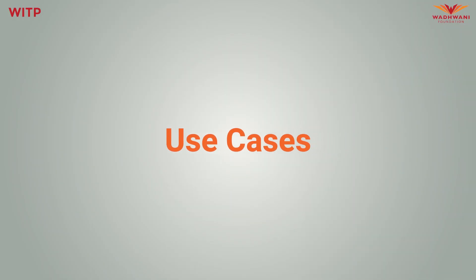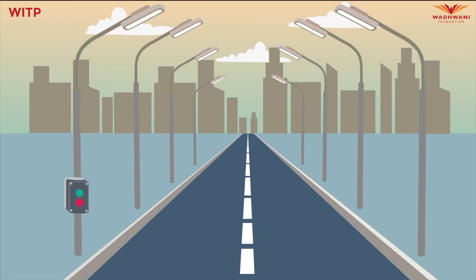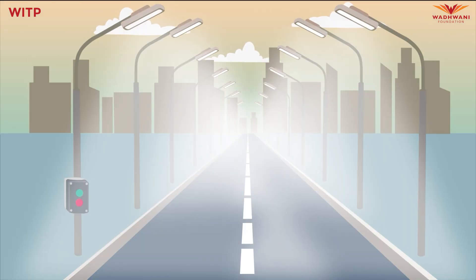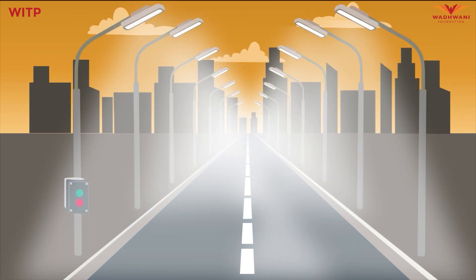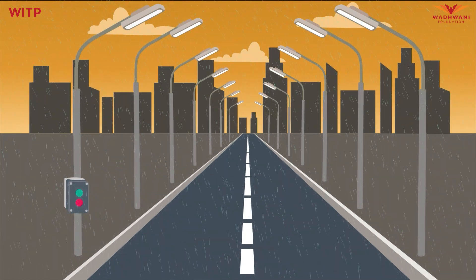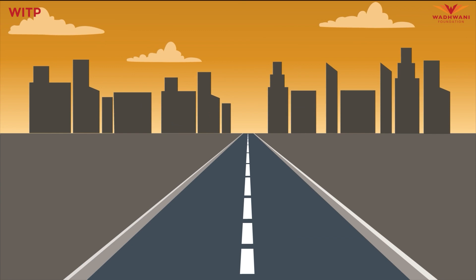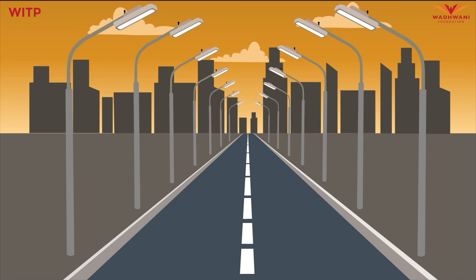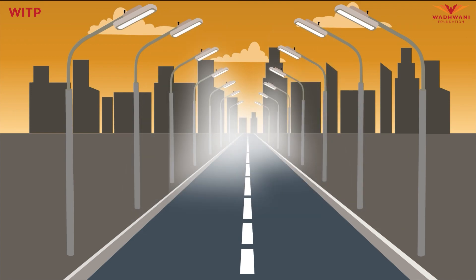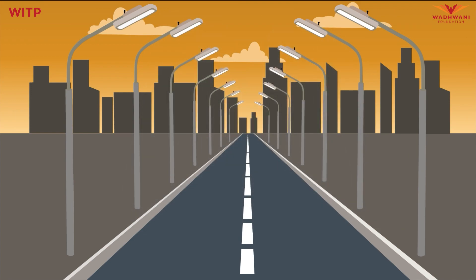Now let's move on to some use cases of IoT. The first use case is automated street lights. Earlier, street lights would be on during a specific time band — say 6 to 7 PM in the evening to 5 to 6 AM in the morning. This led to wastage of electricity during sunny summer months, and on dark, gloomy or rainy days, lights would sometimes not be on when needed. With IoT, we can have sensors that detect ambient sunlight and switch street lights on or off accordingly, conserving electricity while not compromising on security.